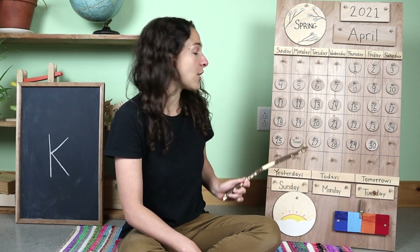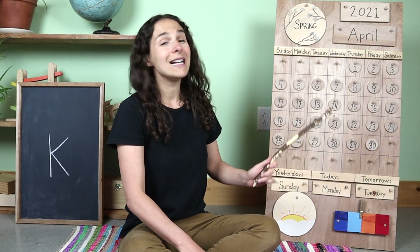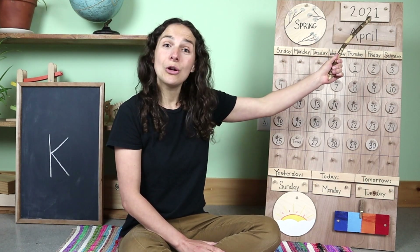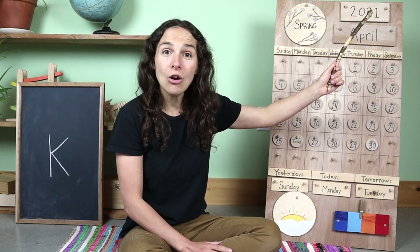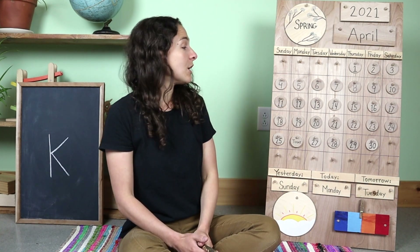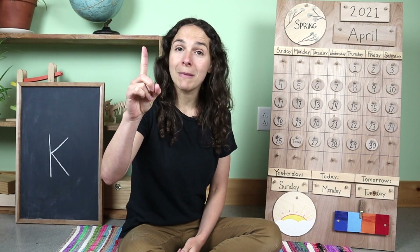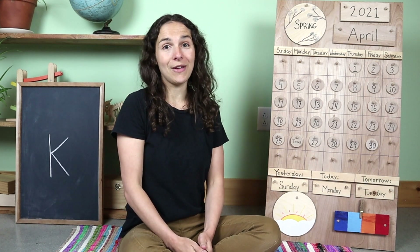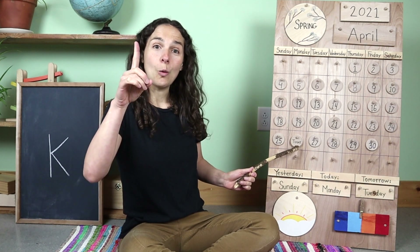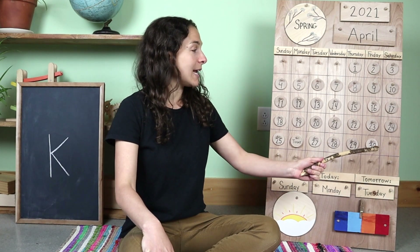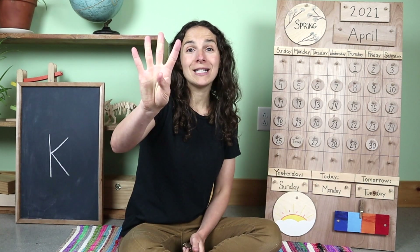Look at this, friends — we are starting the last week of April. Today is April 26, 2021. You can also say that the year is 2021; both ways are correct. So friends, let's take our counting fingers and count the remaining days left in the month of April. After today, we have one, two, three, four — four more days left in the month of April after today.